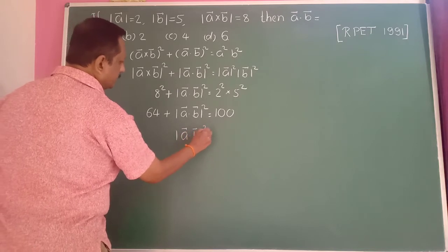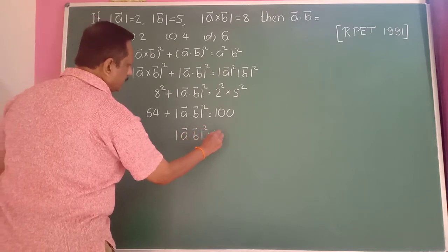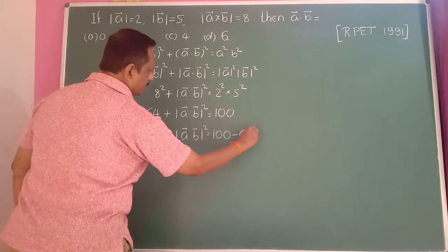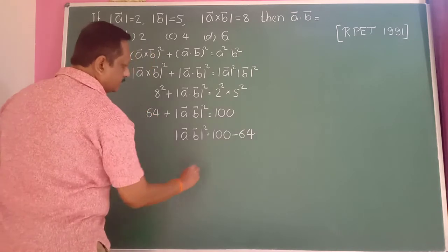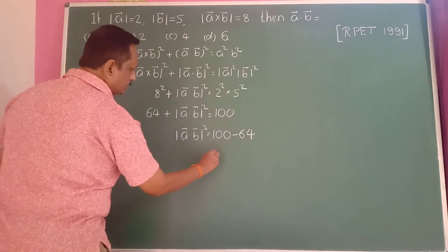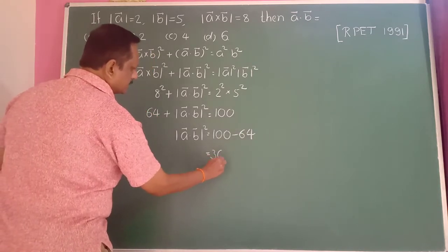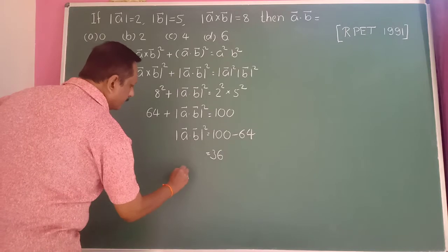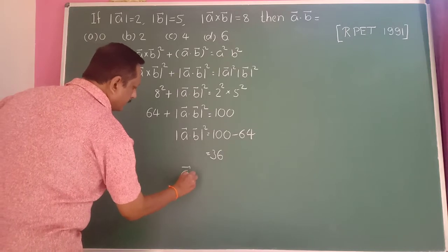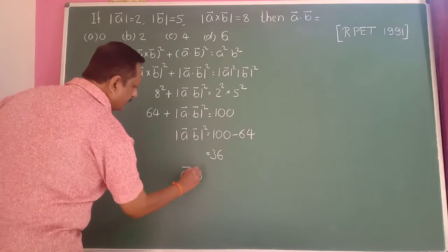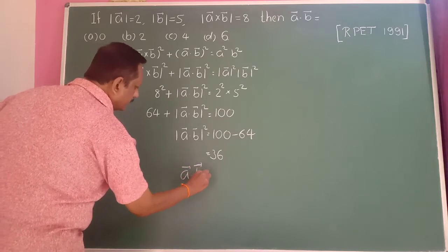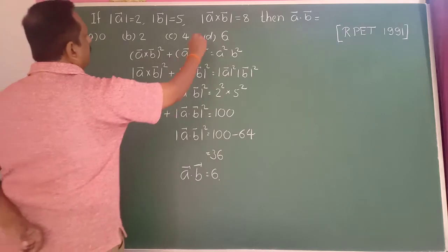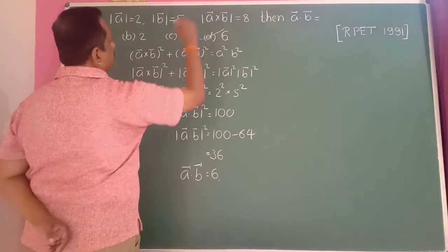Modulus of a-bar dot b-bar whole square equals 100 minus 64, which equals 36. Therefore a-bar dot b-bar equals 6. So option B is the correct answer. These are very important formulae to remember.